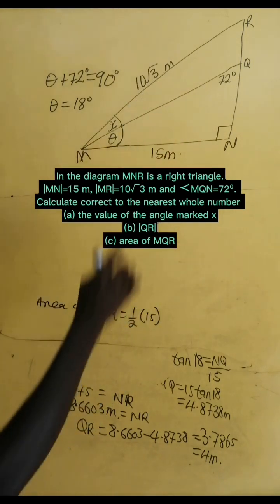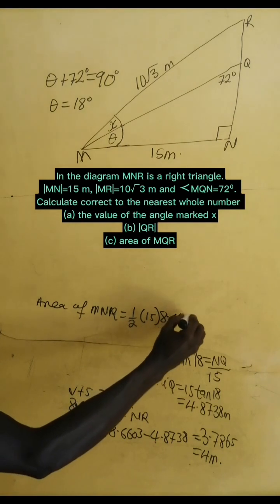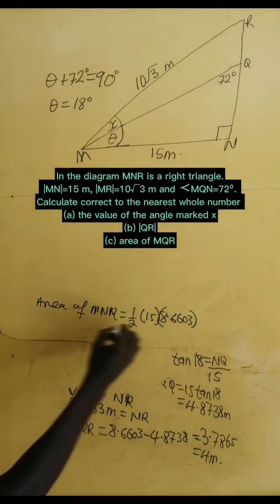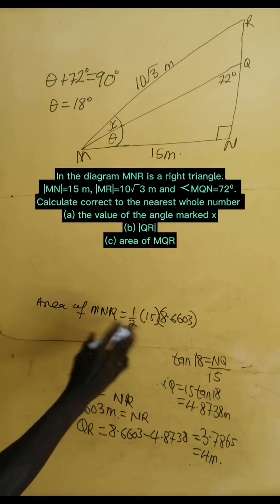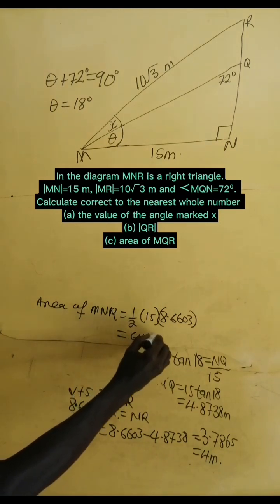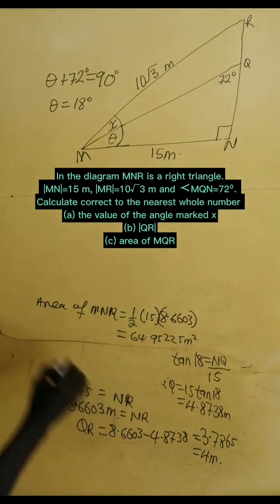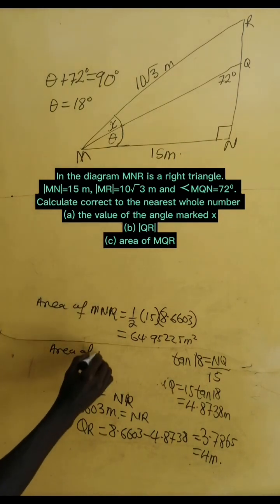And then, you know, area of a triangle is half base times height. That is perpendicular height. So, we take half and the base is 15 and the height of MNR is NR, which is 8.6603. So, if we multiply this with a calculator, we get 64.95225 meters squared.